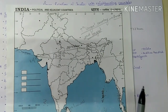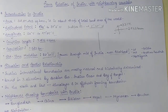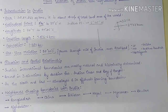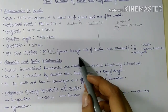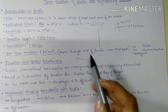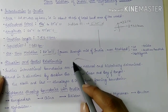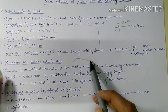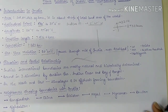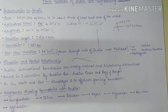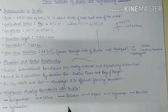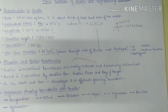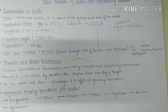Looking at India's situation and spatial relationship with neighboring countries — Indian international boundaries are mostly natural and historically determined. In the north we have the Himalayas, which demarcate the line between India, China, and part of Pakistan. India is situated on the western front of the Indian Ocean and lies midway between Southeast Asia and Southwest Asia.